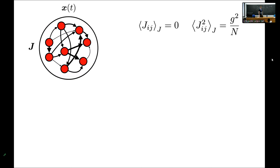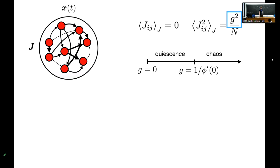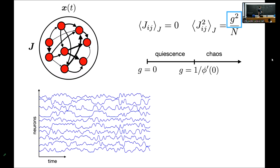I'll do the physics choice of choosing the weights to be random: zero mean and variance G squared over N, where G is a parameter that sets the width of the distribution of synaptic weights. This model has very simple behavior in the limit where N goes to infinity. When G is less than some critical value, there's a trivial fixed point where all the Xs are zero, and this fixed point is stable — the network is quiescent. When G exceeds that critical value, the network exhibits chaotic activity.